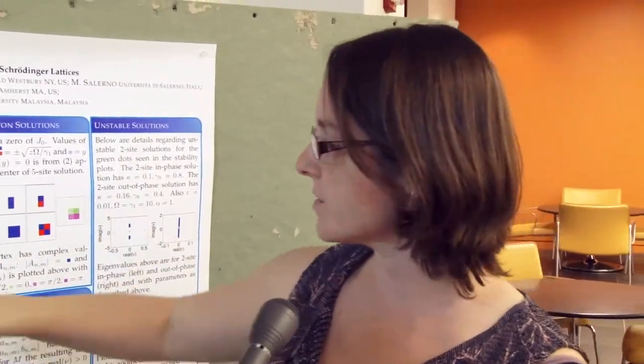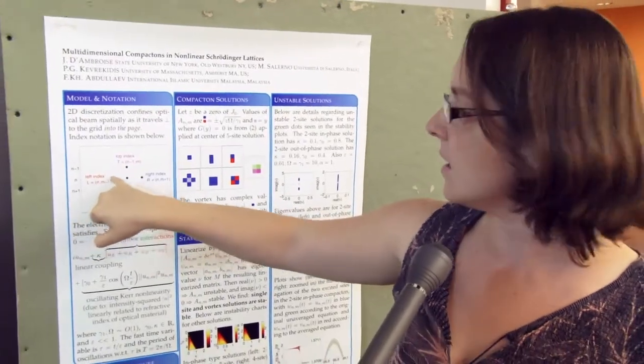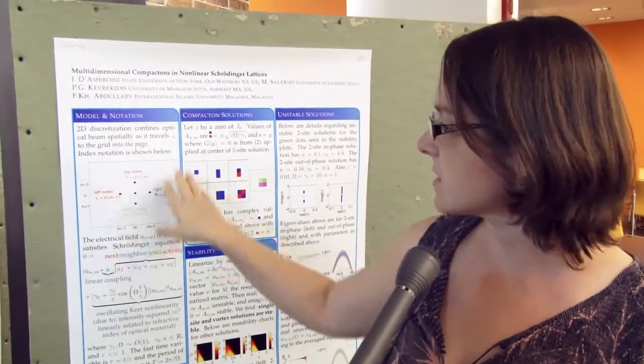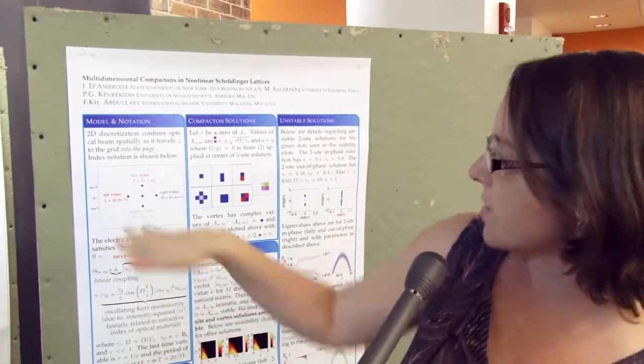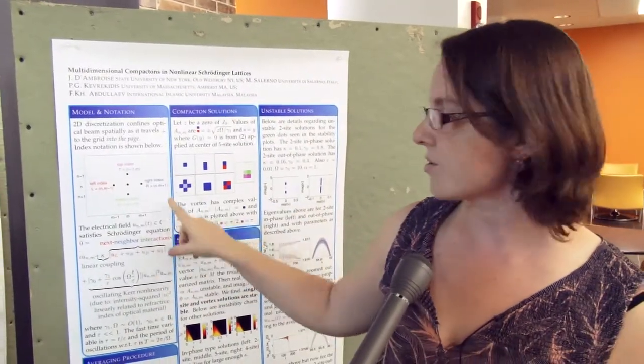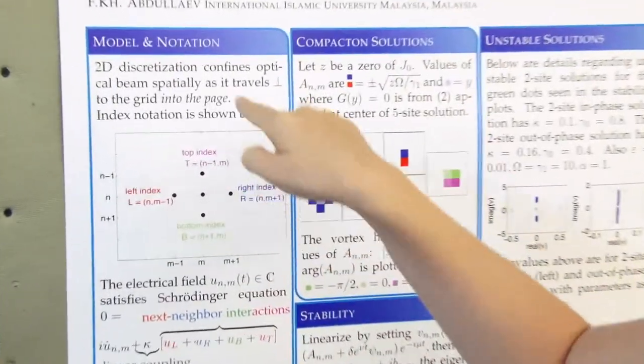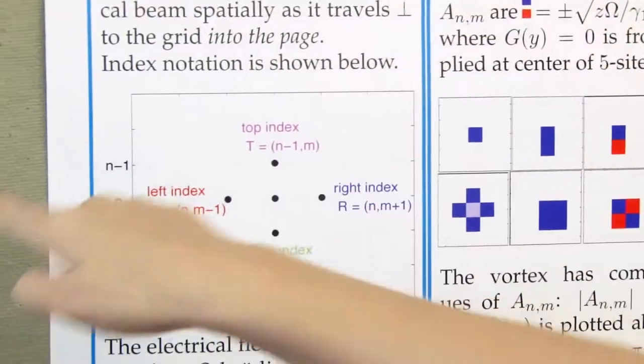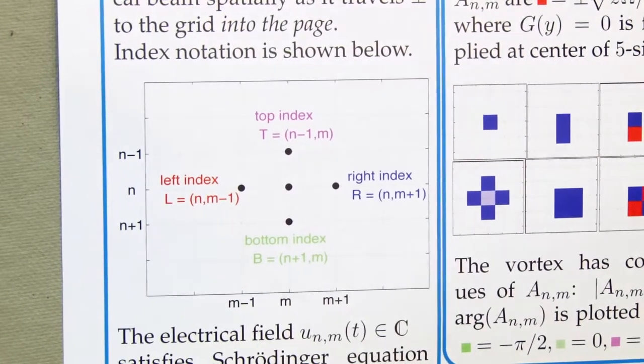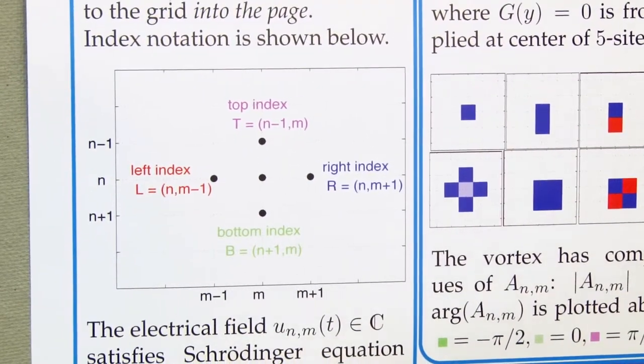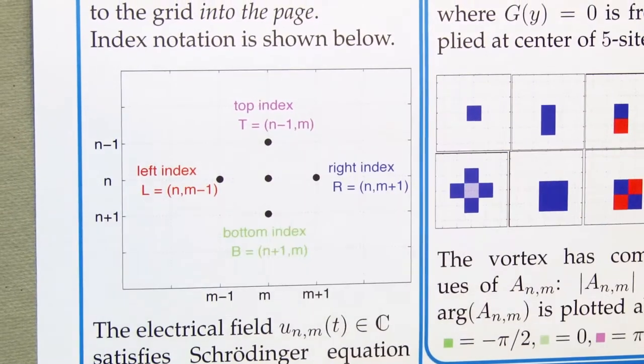We look at equations for optical beams traveling in what's called waveguide arrays. An optical beam cannot just travel anywhere in space — it's restricted to a couple of channels, notated by the dots on the diagram. This is a two-dimensional model, with dots going up and to the left and right.